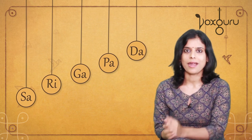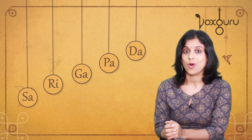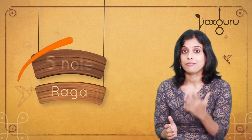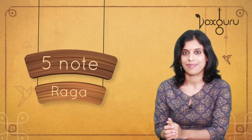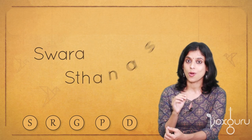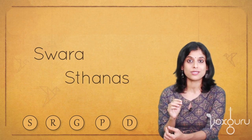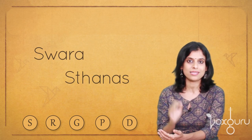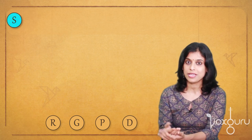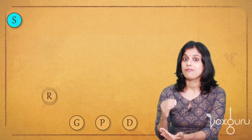In Carnatic parlance, this is called an Audava raga, meaning a five-note raga. Now let us learn the swara sthanas, or the positions of each of these swaras. First we have Sa, which of course has a fixed position. Then we have Ri.